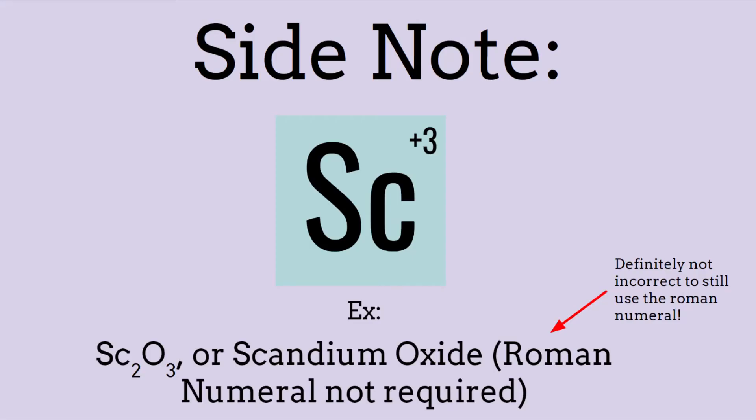A quick side note, there are certain transition metals that always tend towards one charge, such as scandium, which almost always has a plus three charge. In this case, a roman numeral is not always required.